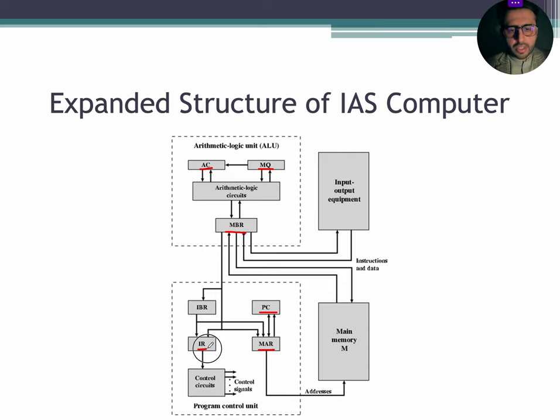The next register is IR. IR stands for instruction register. It contains the 8-bit opcode of the instruction being executed. And the last one is IBR. IBR stands for instruction buffer register. It holds the instruction from a word in the memory.